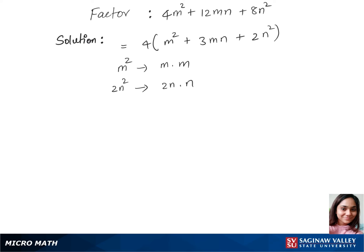Now let's use these values and plug into our expression. So we'll try our first guess. So that's 4 times m plus 2n times m plus n.